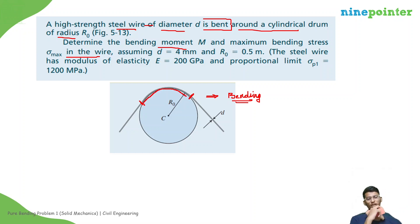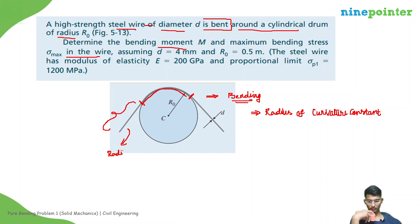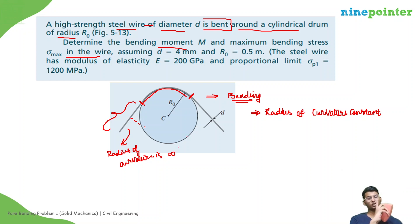Observing the wire: in the bent region around the drum, the radius of curvature is constant. In the straight portions, the radius of curvature is infinite because the wire is straight.